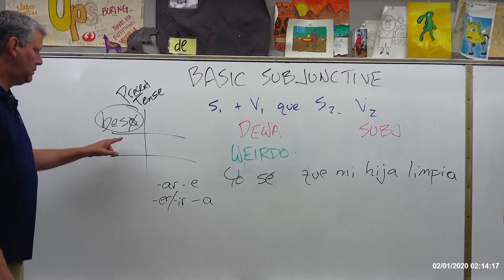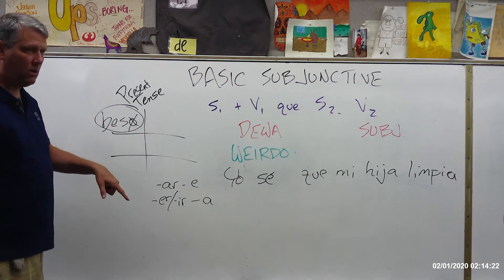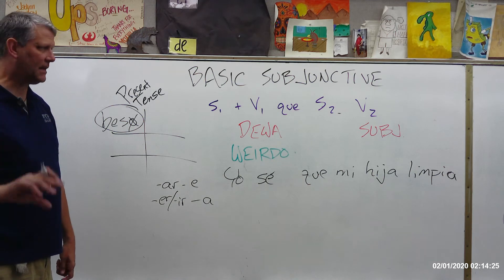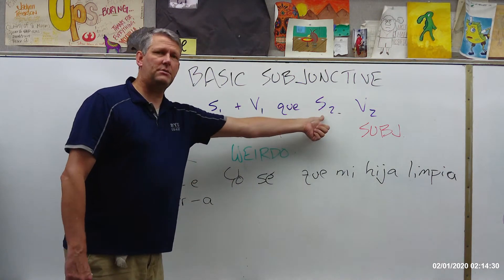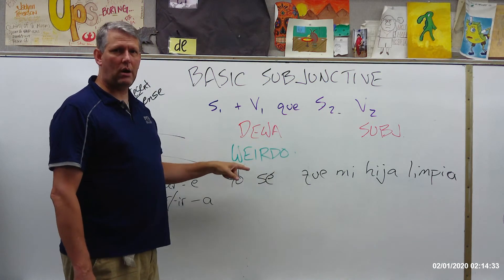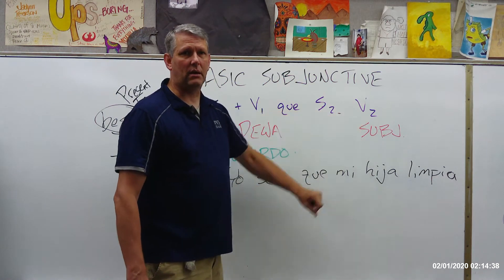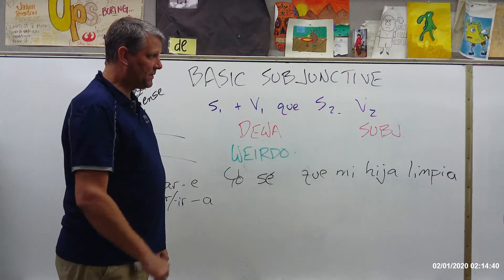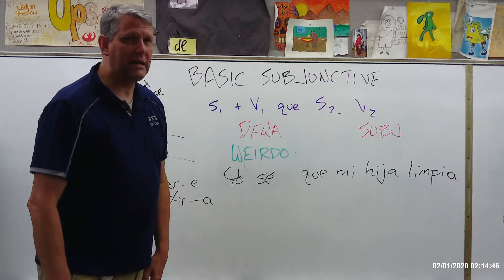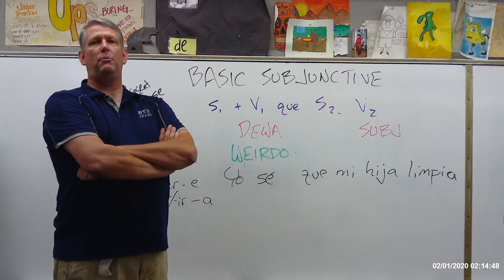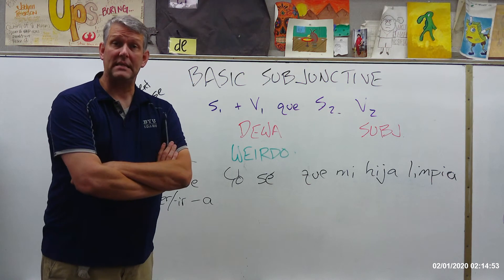Recap: how to form it — take the present tense yo form, drop the O, add the opposite vowel. That's the subjunctive. For your basic sentence structure using the subjunctive, you're going to have two different subjects, a verb that expresses either DIWA or WEIRDO, and then the subjunctive will appear in that second clause.